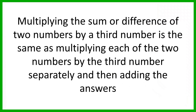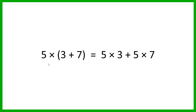When we multiply the sum or difference of two numbers by a third number, it's the same as multiplying each of the two numbers by the third number separately and then adding the answers. So let's have a look at an example. If I've got 5 times 3 plus 7, if you look at 3 plus 7, that gives you 10, so 5 times 10 is 50.